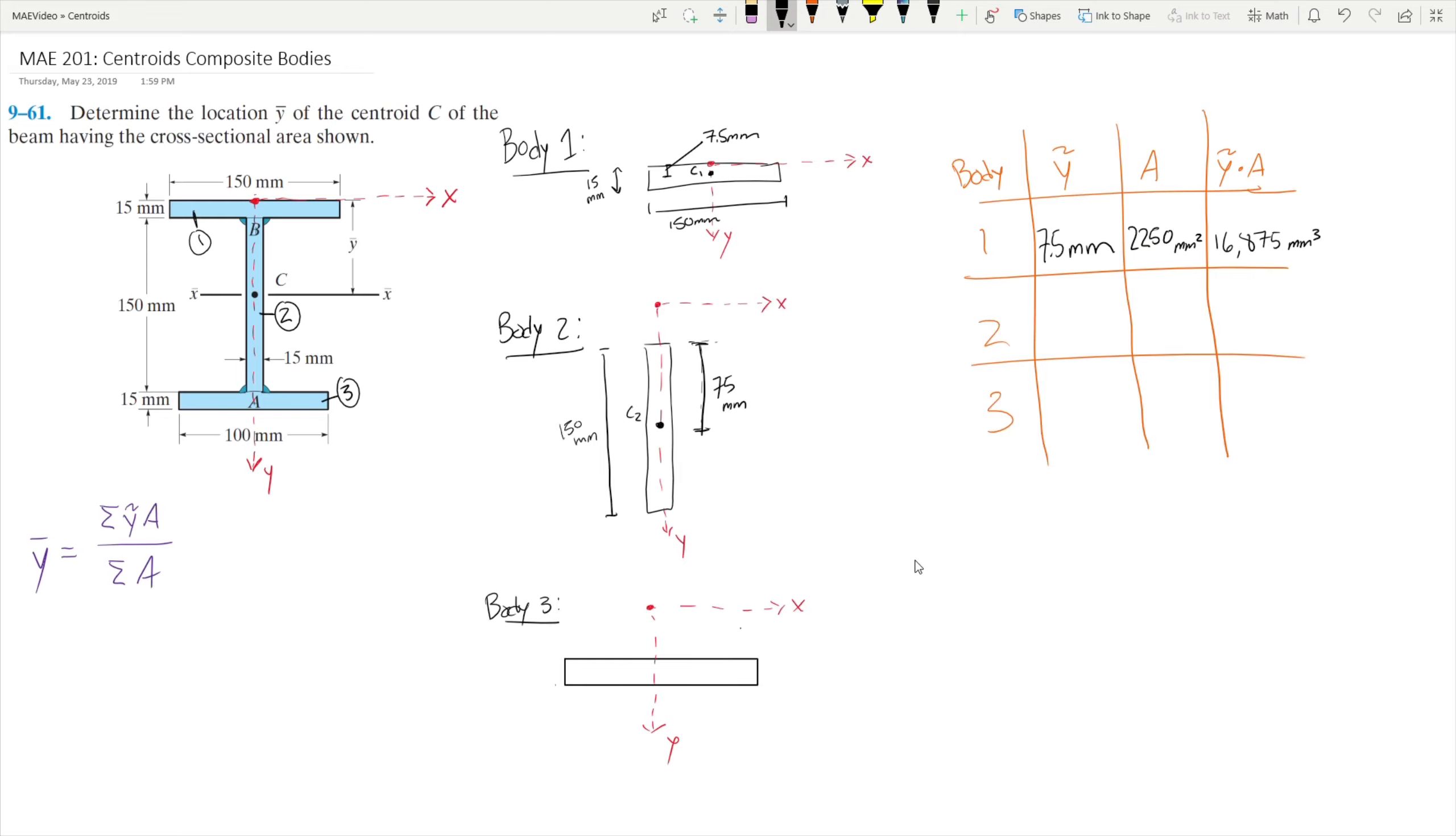We're not done yet though. Don't forget that our y-tilde is the distance with respect to the origin from our coordinate system. This means that our y-tilde is going to be 75mm plus the distance from the top of the body toward the defined origin. And that distance right there is 15mm. So our y-tilde for body 2 is actually 90mm because of 15 plus 75mm.